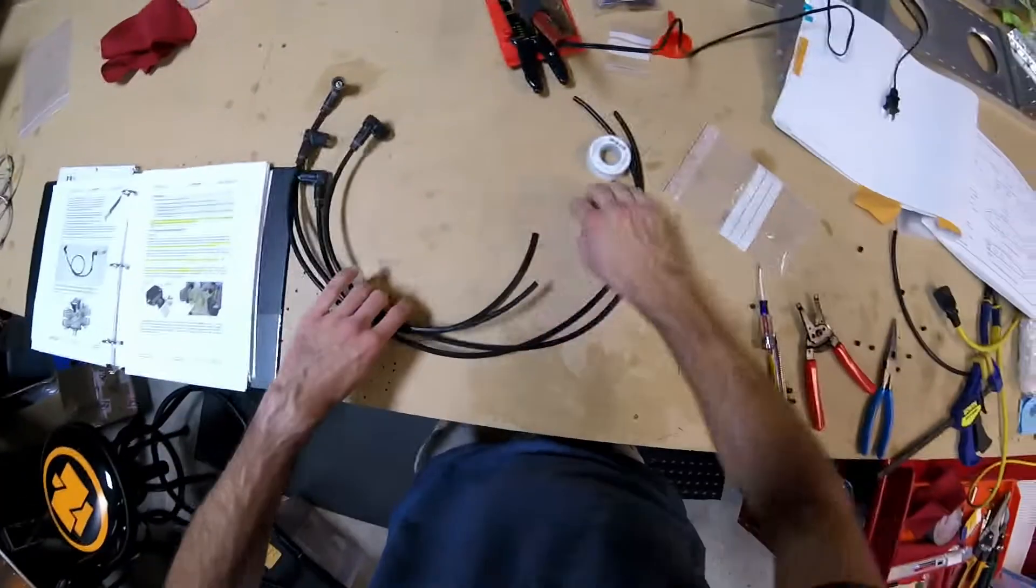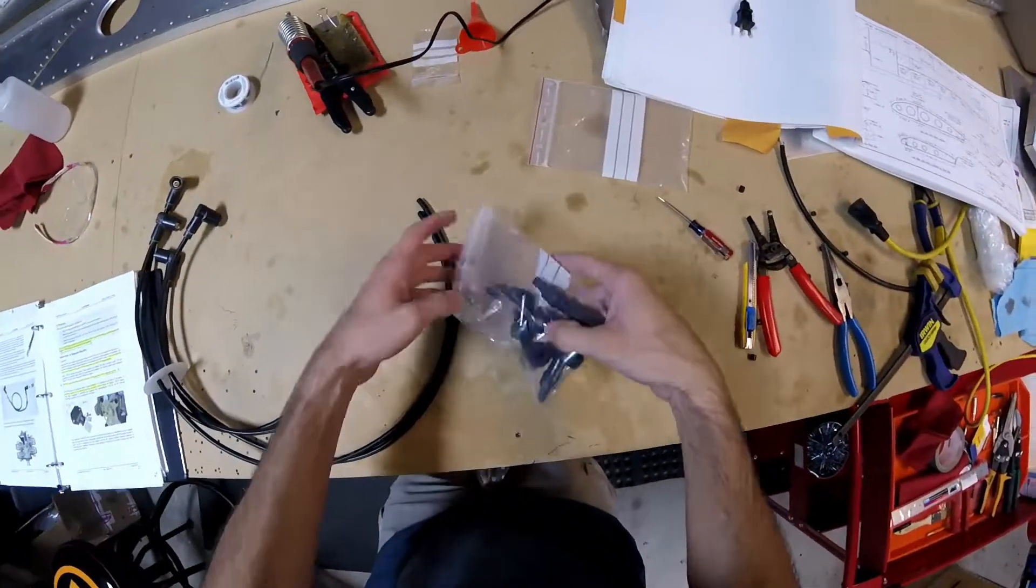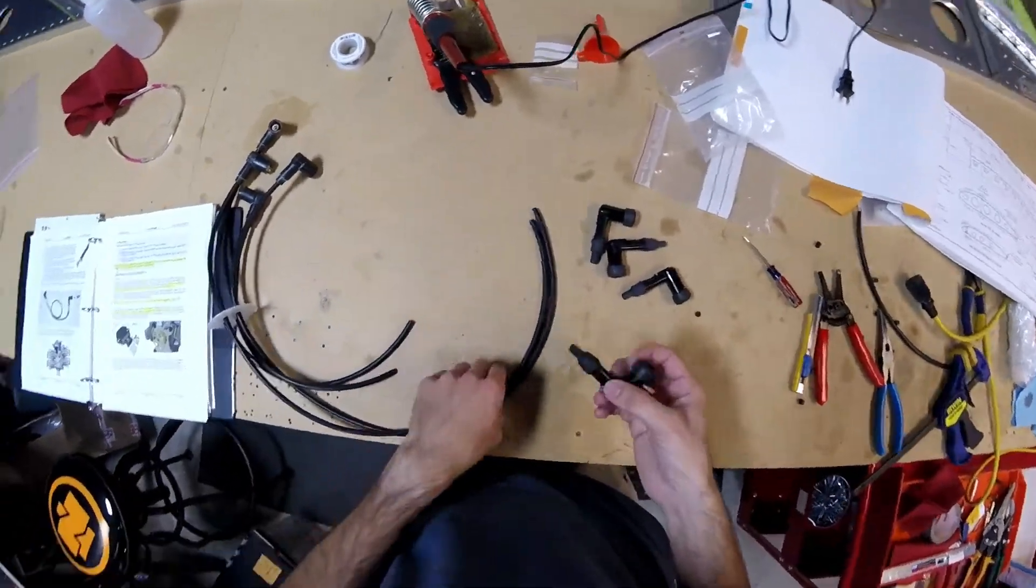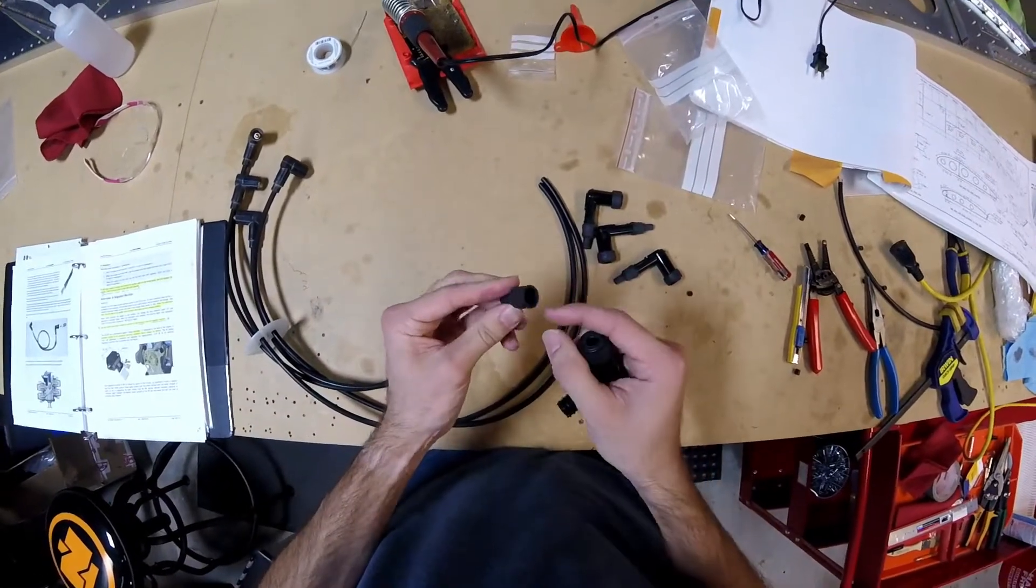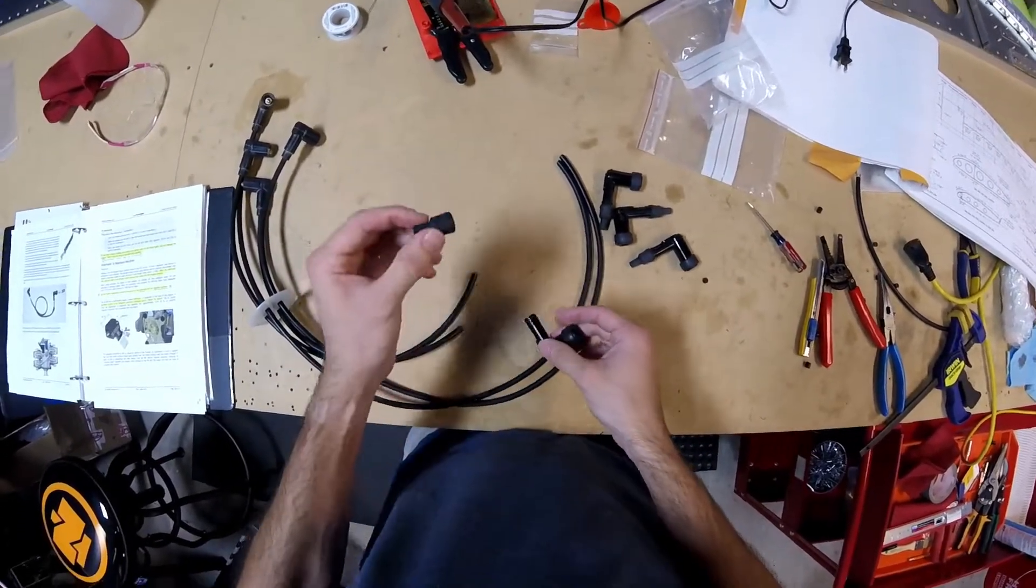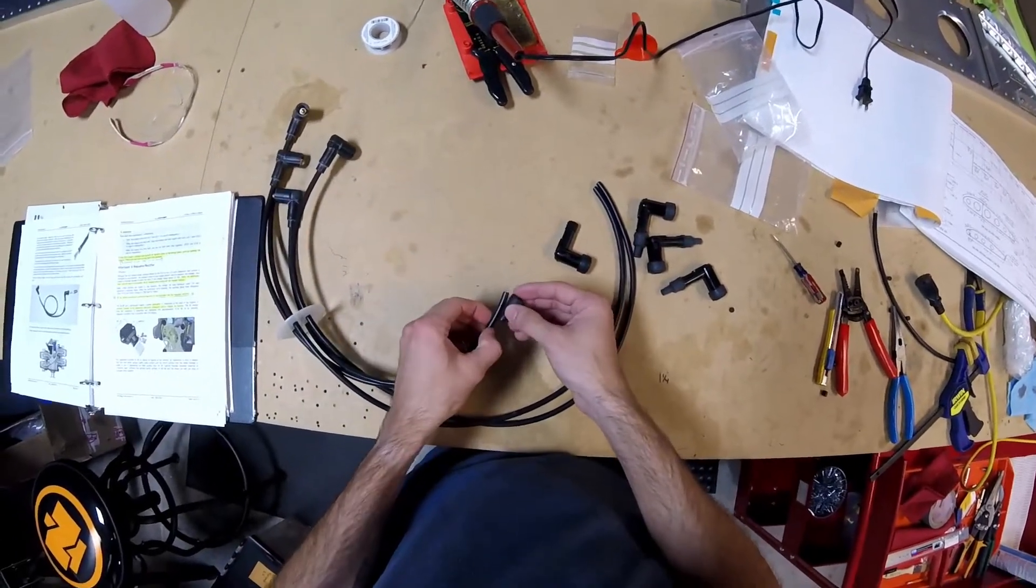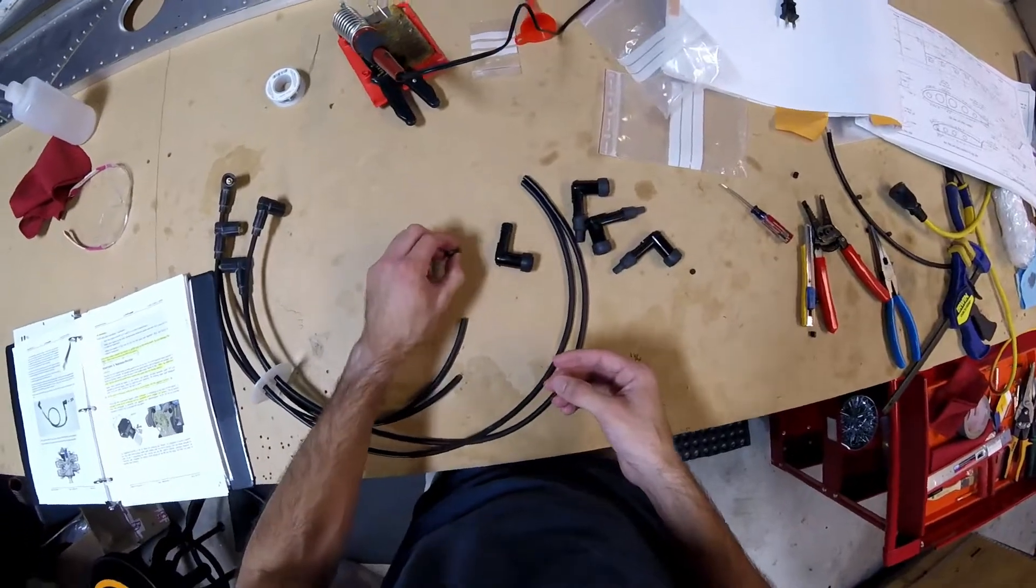Now we'll flip this around and do this other side. Okay, now we're going to actually put on the side for the spark plug connectors. The tricky thing about this is remembering to put these little covers on first.